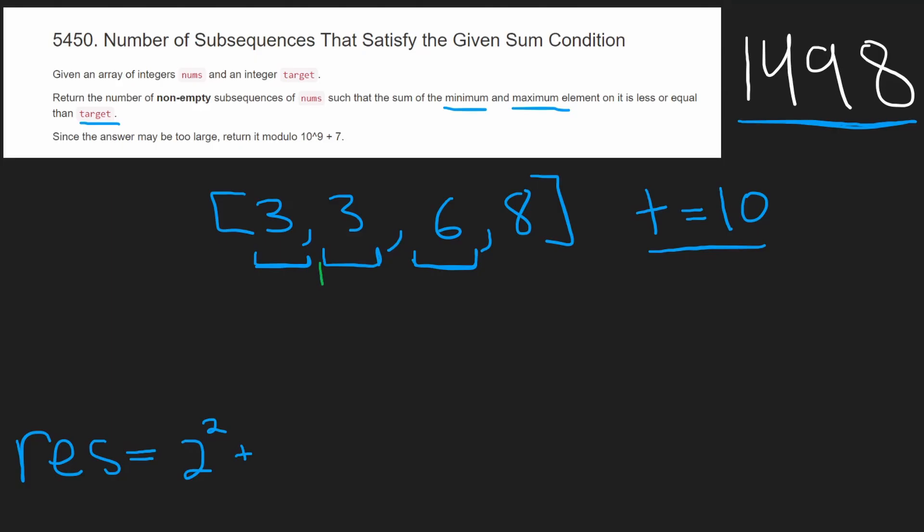So now we want all subsequences starting at this 3. Even though it's still a 3, it counts as a unique subsequence, because subsequences matter on the position of the values. So how many values after this 3 can we get that will make sure that the sum of the min and the max are less than 10, or less than or equal to 10? Well, we know it's just this 6. So there's only one value that comes after it that we can do. So to our result, we're going to say 2 to the power of 1 is going to be added to the result.